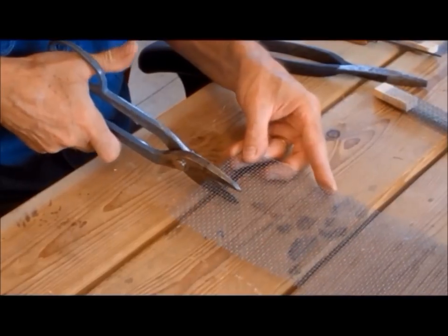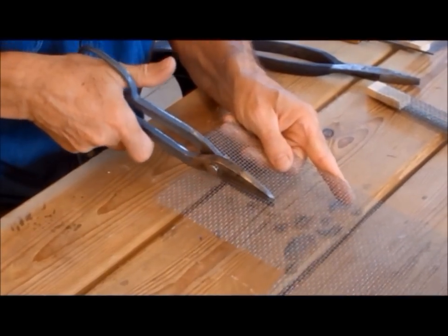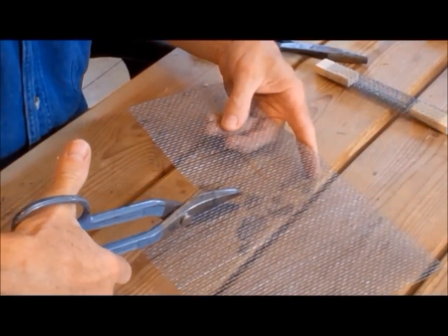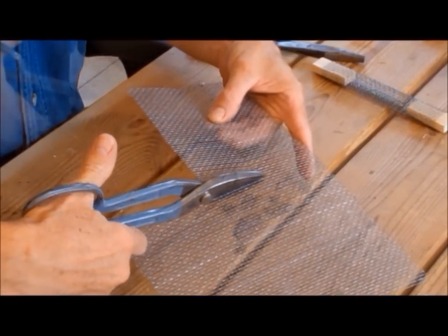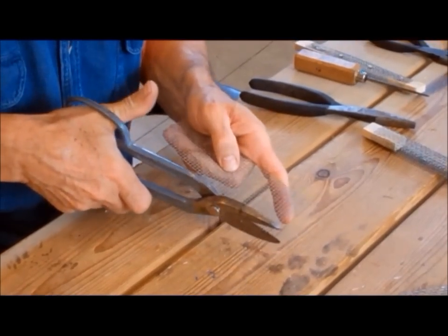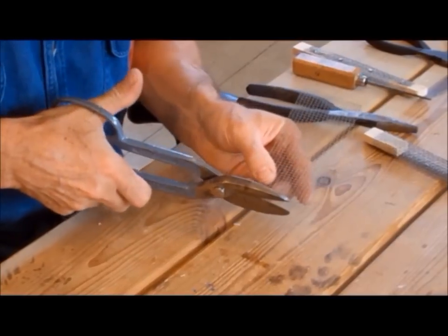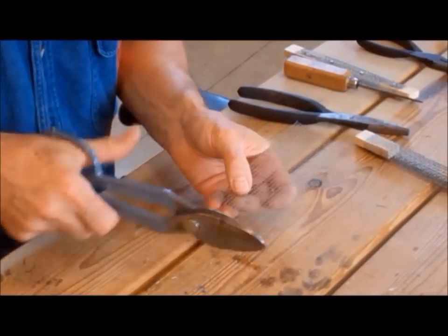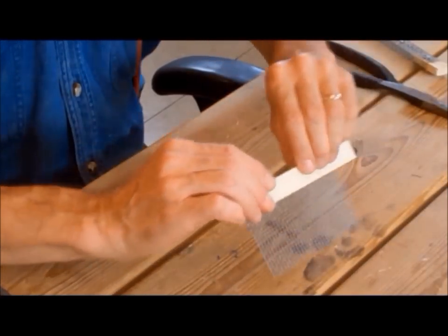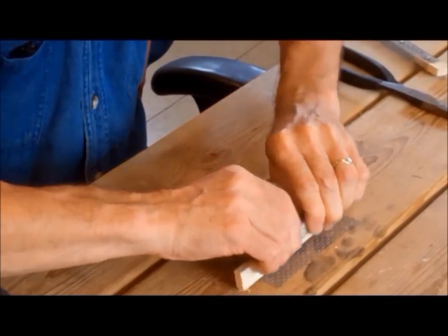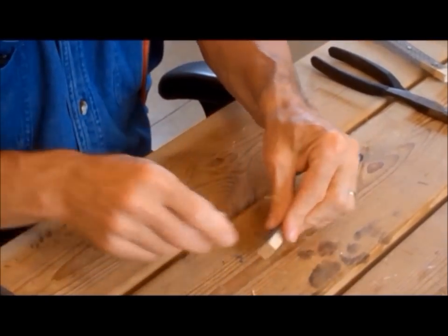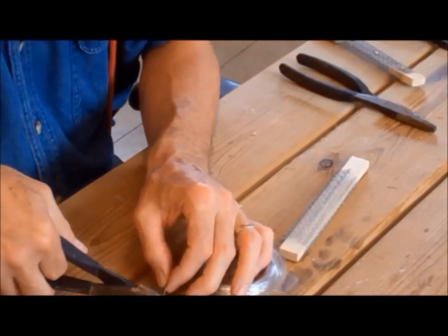Now we turn our attention to making the cage. From number eight hardware cloth, cut a piece about six inches long and about two and a half inches wide. You will probably have sharp little wire stubs sticking out along the edges that you cut. Trim these off. I am using one of the wood blanks that I just cut as a form to bend the hardware cloth. Try to get a good crease on the corners. I am shooting for a three-eighth inch overlap. That's three squares of the mesh.